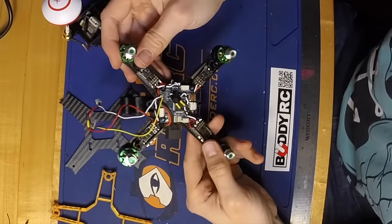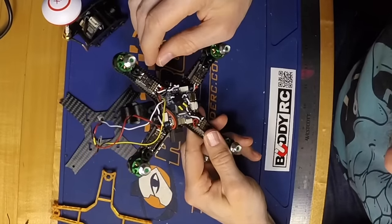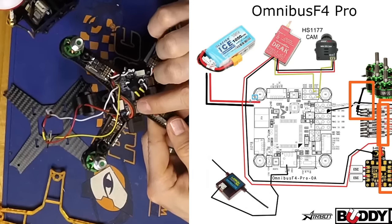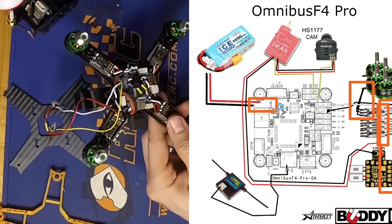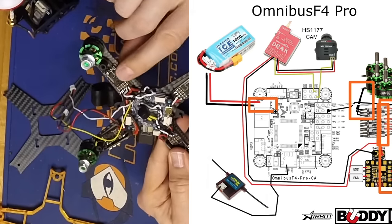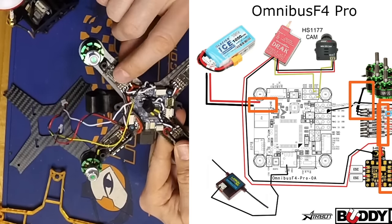Once the flight controller is in place, I powered the board off the main battery pads right on the board. It can take up to 6S, and I powered those off the power and ground terminals of one of my ESCs.